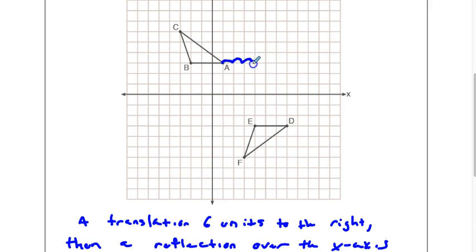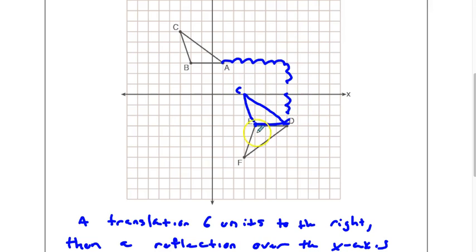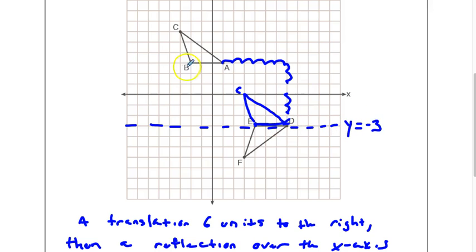Another way to do this is to do a translation 6 units to the right and then 6 units down. If you've done it that way, what you should get is something that looks like this. Once you've done your translation, what you have to do is a reflection over the line right here in the middle. This line is y equals negative 3. So translation 6 right, 6 down, and a reflection over y equals negative 3 would also be correct.